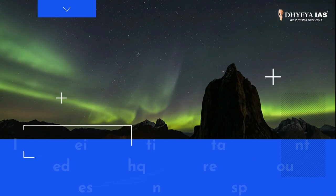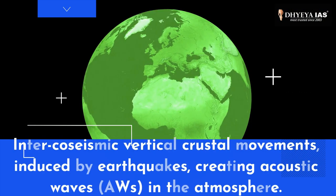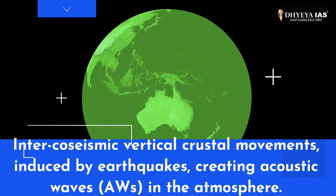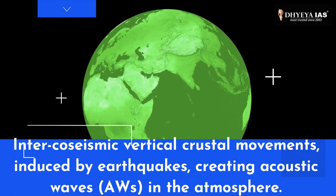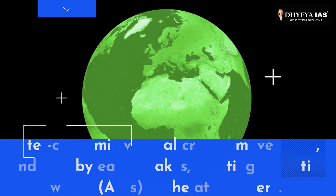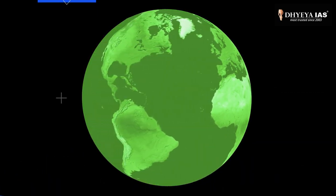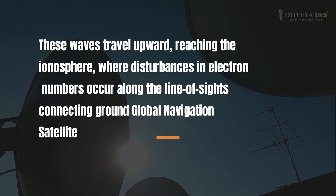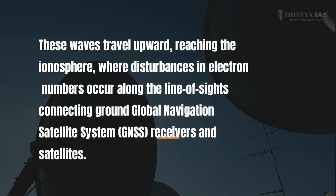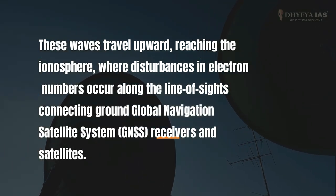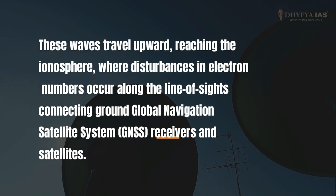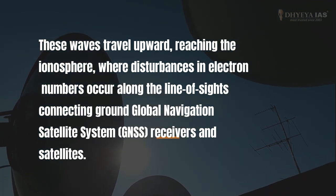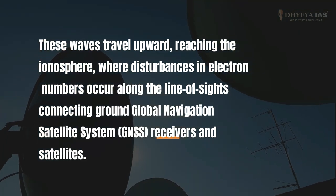But what triggers these perturbations? Intercoseismic vertical crustal movements induced by earthquakes create acoustic waves (AWs) in the atmosphere. These waves travel upward, reaching the ionosphere, where disturbances in electron numbers occur along the lines of sight connecting ground Global Navigation Satellite System (GNSS) receivers and satellites.